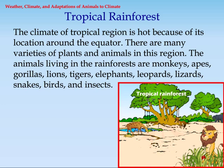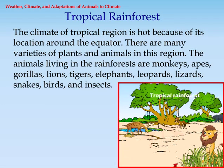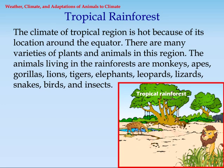Tropical Rainforest. The climate of the tropical region is hot because of its location around the equator. There are many varieties of plants and animals in the region. The animals living in the rainforests are monkeys, apes, gorillas, lions, tigers, elephants, leopards, lizards, snakes, birds, and insects.